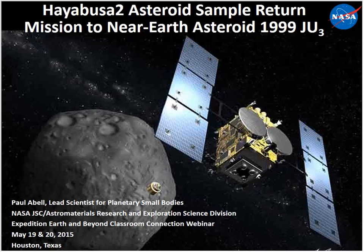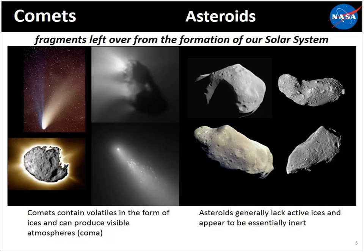We're going to get into the presentation. I want to talk a little bit about what comets and asteroids are. These are fragments — the leftover building blocks from the formation of the early solar system. They're very old materials, the leftover bits that didn't get incorporated into the sun or didn't make up the planets. Comets have ices on their surfaces, and when those ices warm up they produce those nice big tails. Asteroids, on the other hand, are essentially rocky-type objects — they don't have the ices that make comets so different.